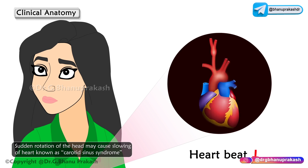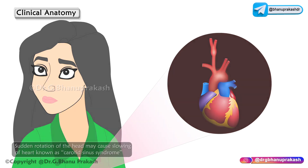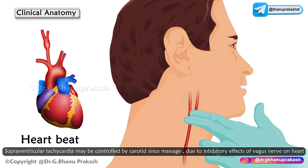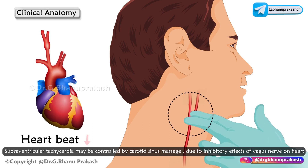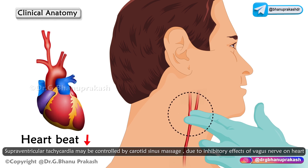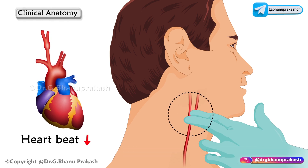This particular condition is called carotid sinus syndrome. In events of supraventricular tachycardia, it may be controlled by a gentle carotid sinus massage, especially because of inhibitory signals by the vagus nerve on the heart. With this, we have completed the carotid body as well as carotid sinus.